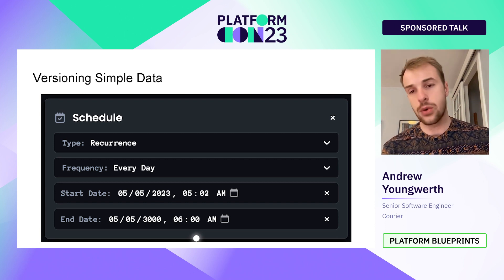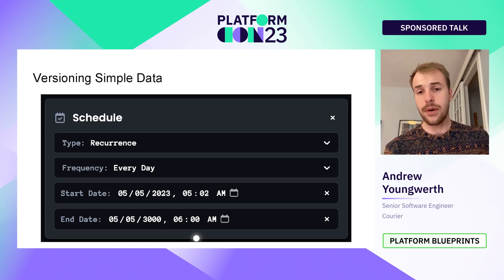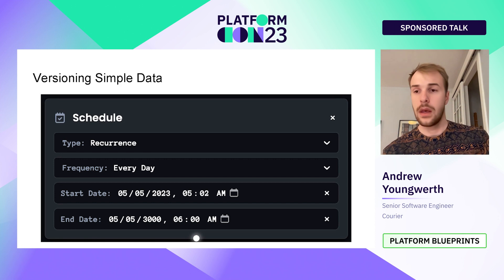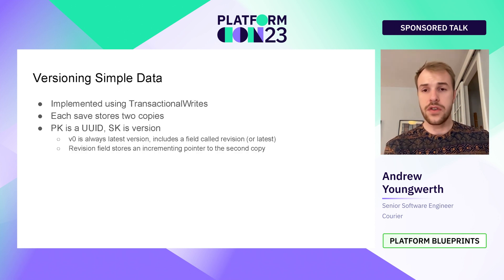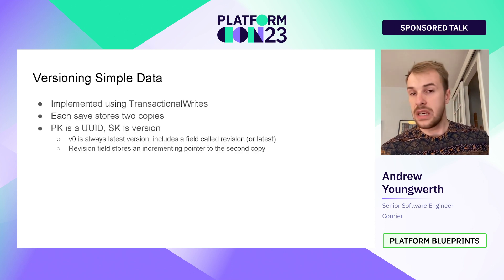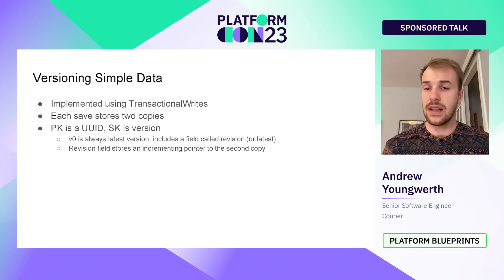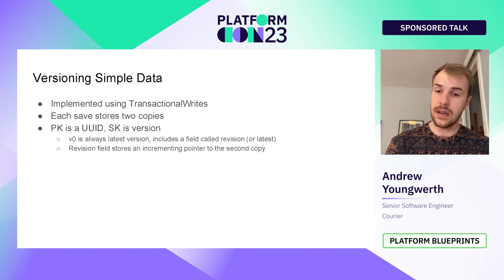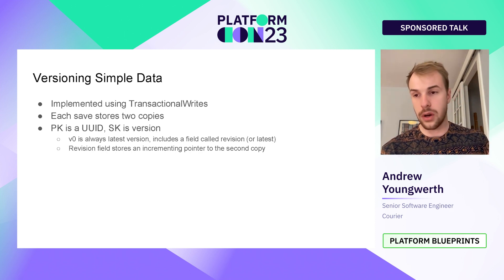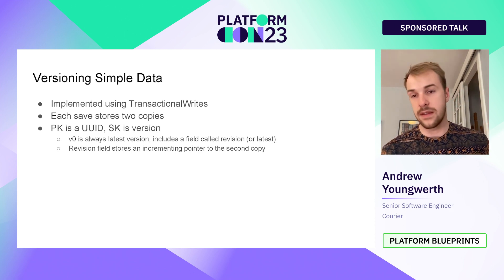This is just a schedule that defines a type, a frequency, and a start date and an end date — we'll just pretend that's the only document we're versioning for now. We'll be implementing this using DynamoDB transactional writes. This allows us to handle things like race conditions very easily in case two people are working at the same time — we wouldn't want to overwrite the same version.